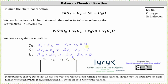Each equation gives us one row in the augmented matrix. Looking at the first equation, the first row is one, zero, negative one, zero, zero — because the coefficient of x sub one is one, the coefficient of x sub three is negative one, and the constant is zero. The second row is two, zero, zero, negative one, zero. The third row is zero, two, zero, negative two, zero.